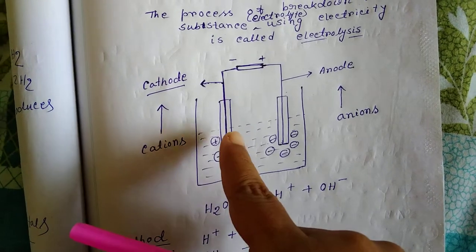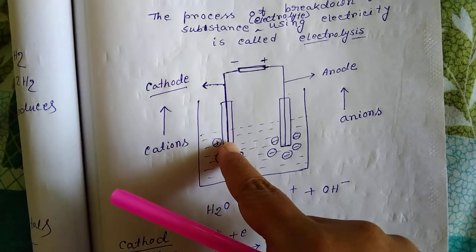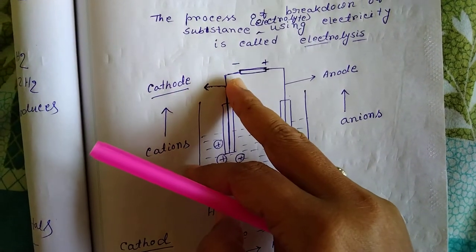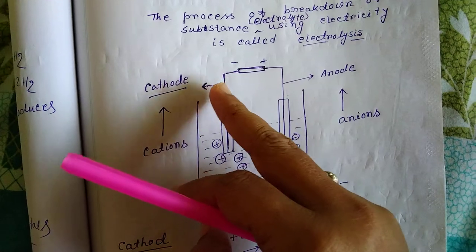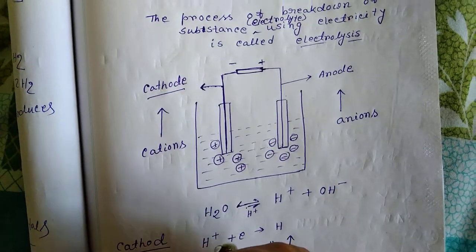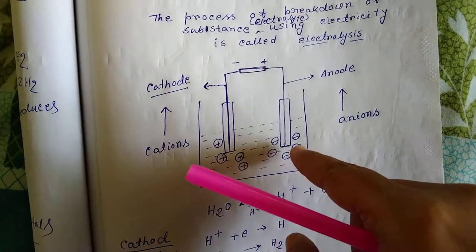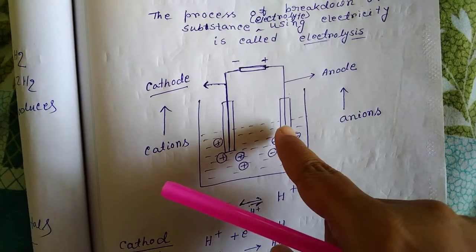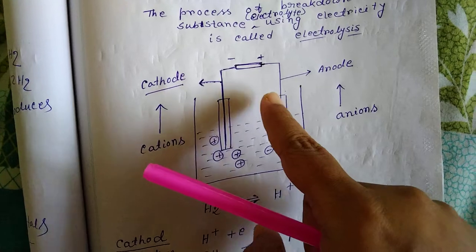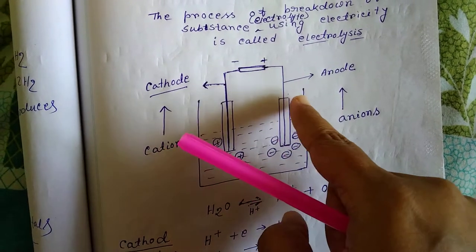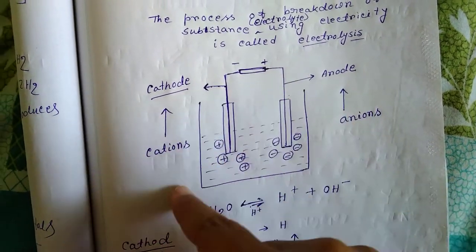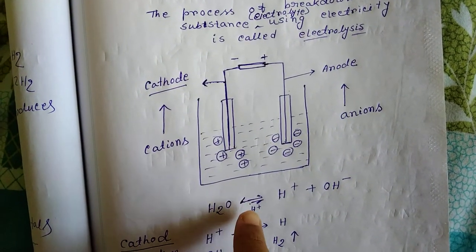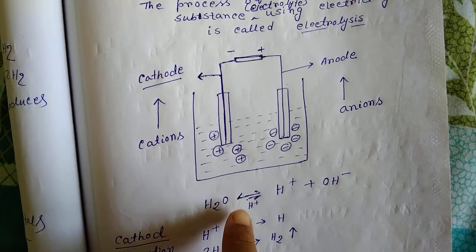The electrode connected to the negative terminal of the battery is known as the cathode. The electrode which is attached to the positive terminal of the battery is known as the anode.